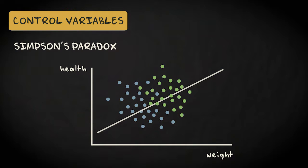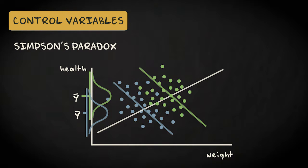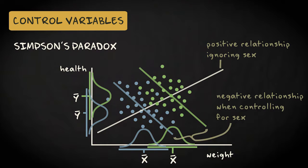However, if we take into account the cat's sex as a control variable, we see that if we consider female and male cats separately, we find a negative relation. For both sexes, heavier, more obese cats are less healthy. Since the females are less healthy than the males, and they also weigh less, we find a spurious positive relation between health and weight when we ignore sex.